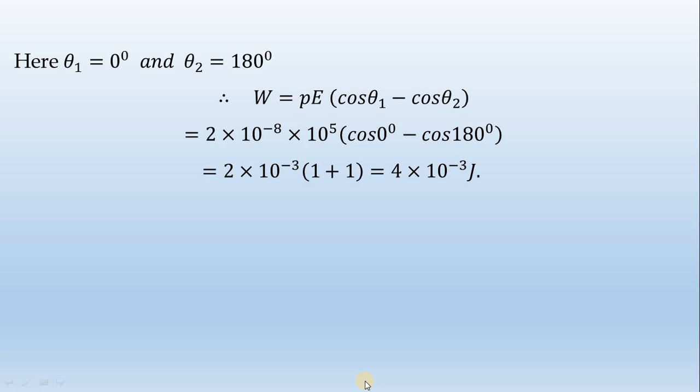Now, theta 1 equals 0 degrees and theta 2 equals 180 degrees. Then W equals P E times cosine theta 1 minus cosine theta 2.